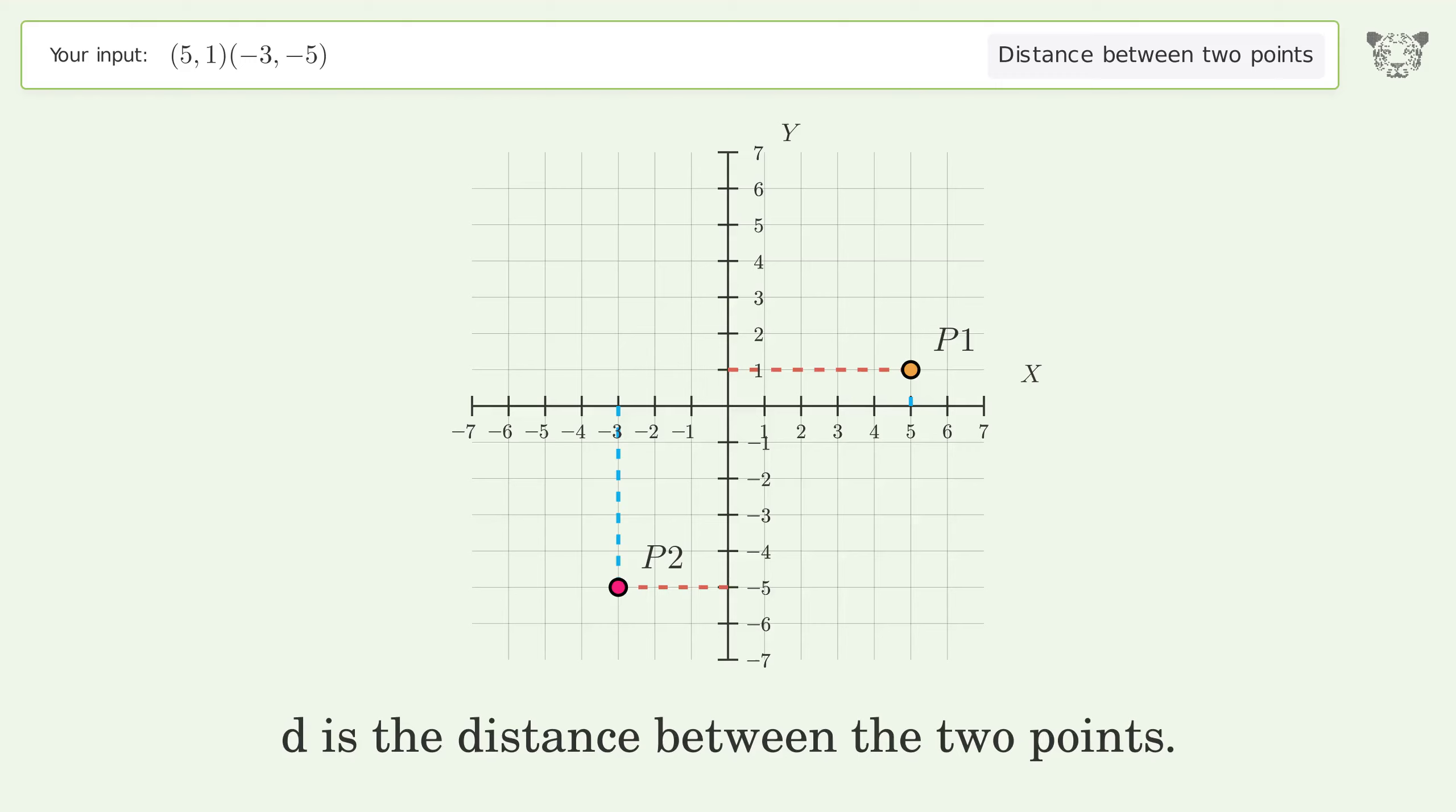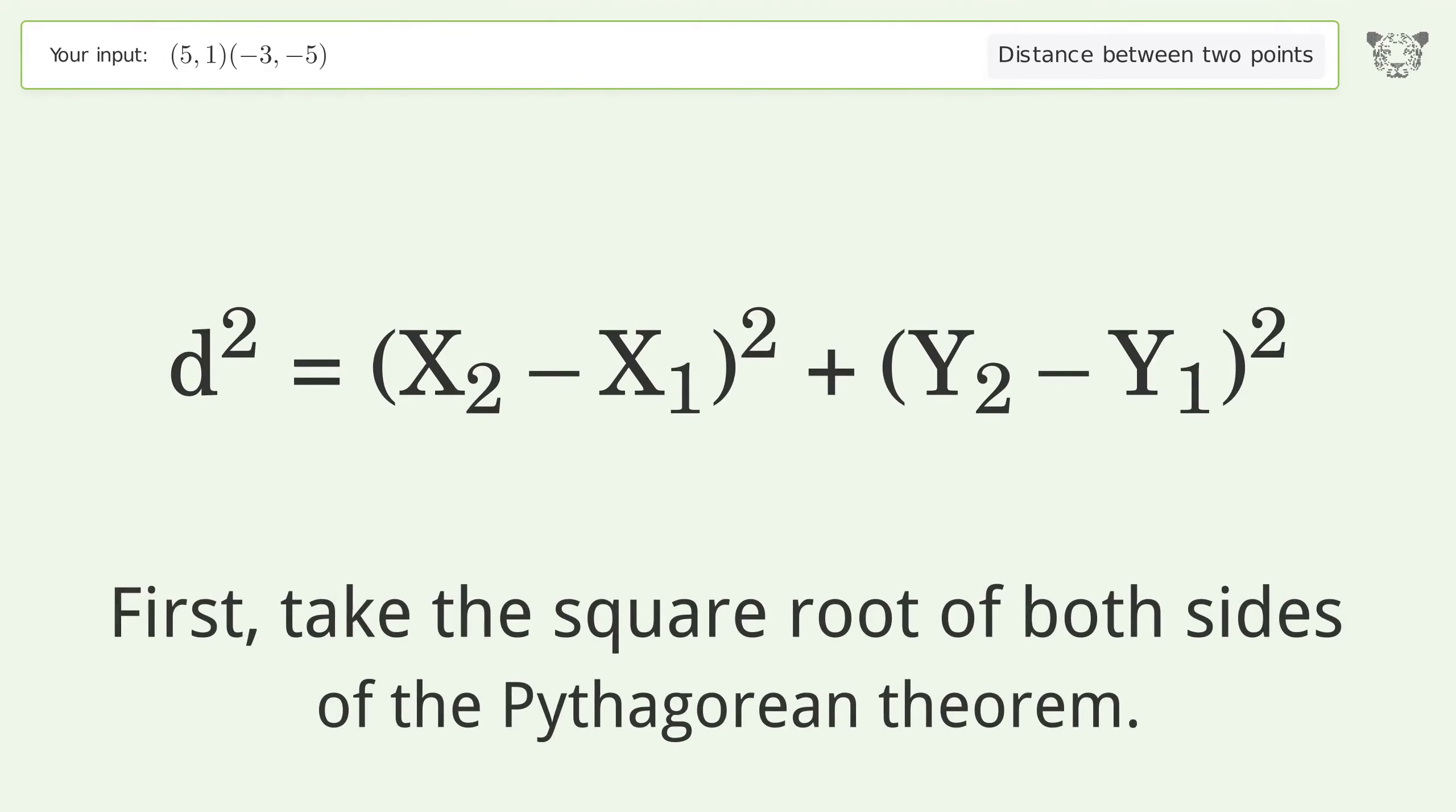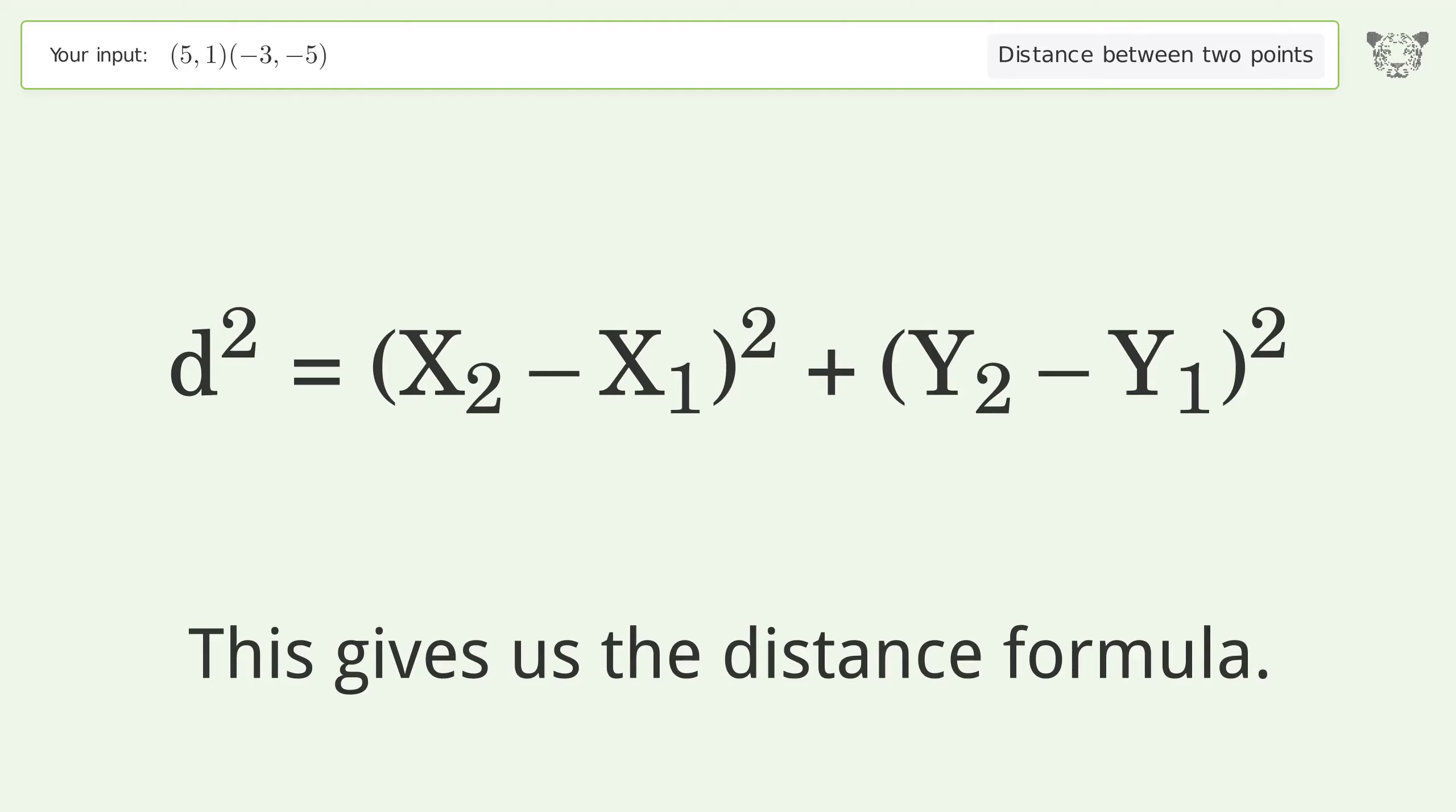d is the distance between the two points. First, take the square root of both sides of the Pythagorean theorem. This gives us the distance formula.